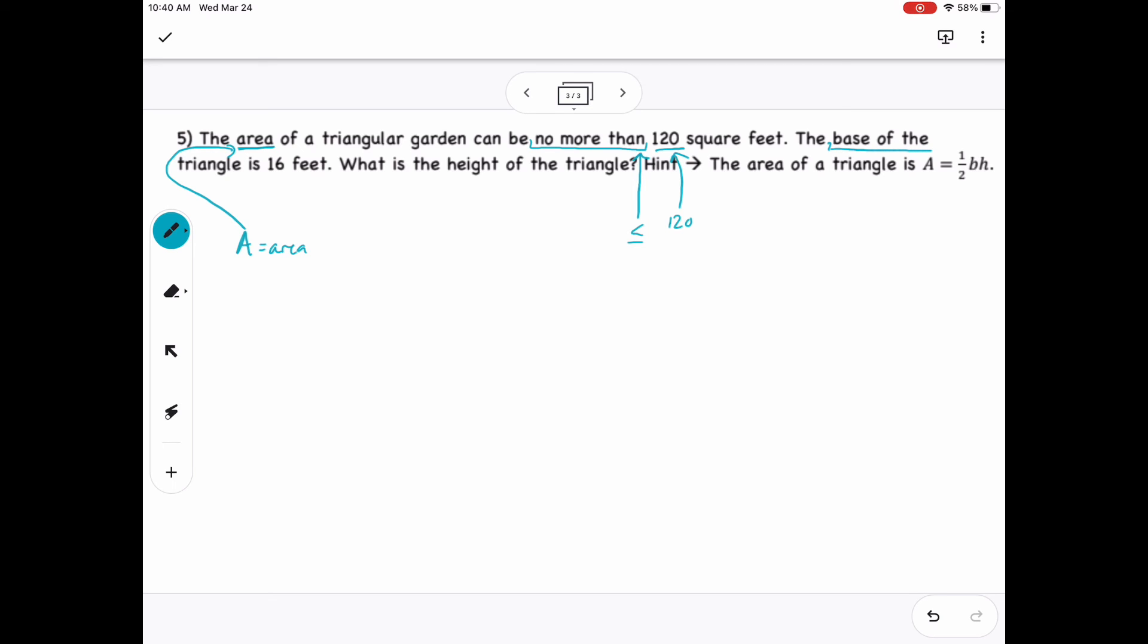Then from there, I also see that they tell me what the base of the triangle is, which is 16 feet. So I can actually say B is equal to 16. But I also don't know what the height is. So this is what I'm looking for. That's my variable. Okay?